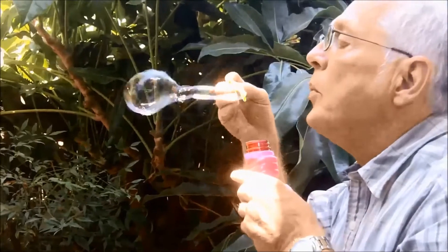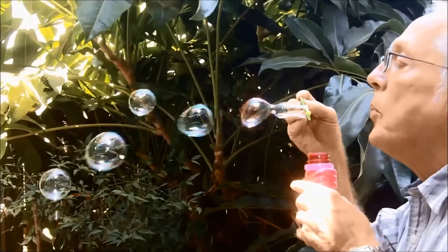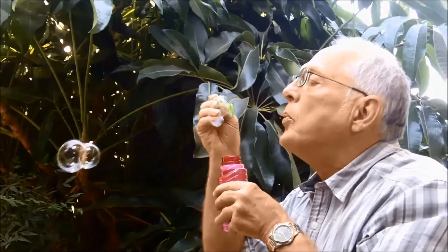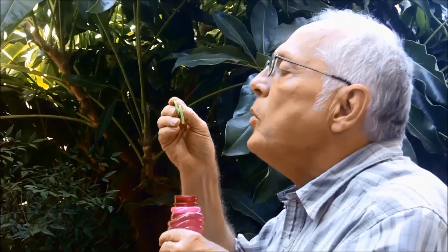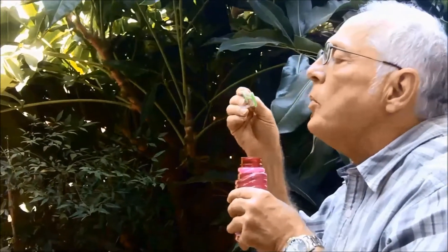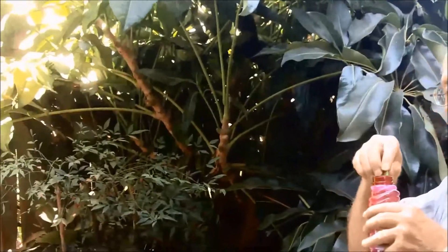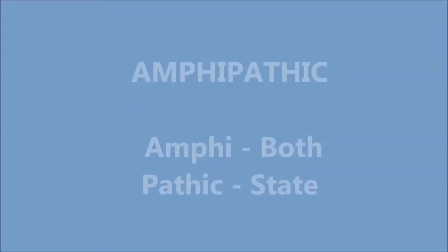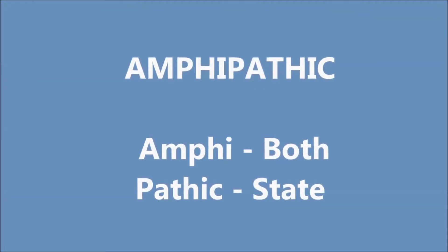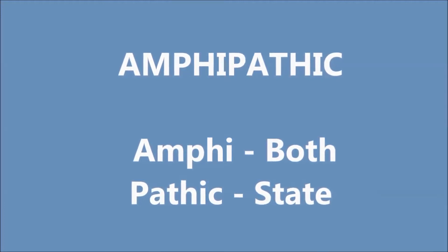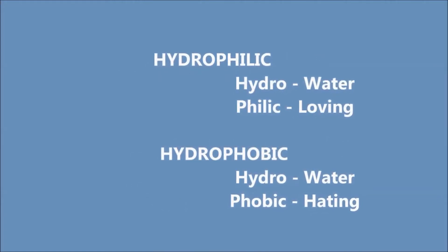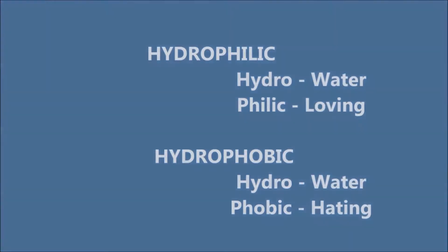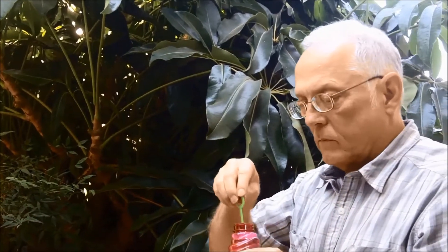Oil versus vinegar — what does this have to do with soap bubbles or biology? What these three relatively diverse subjects have in common is something called hydrophobic-hydrophilic interactions, which we will be discussing in this episode. The detergent molecule in a soap bubble and the fat molecule in a cell's plasma membrane both share a common chemical characteristic called amphipathic — amphi meaning both, pathic meaning state. One state is hydrophilic, hydro meaning water, philic meaning loving; the other is hydrophobic, meaning water hating.